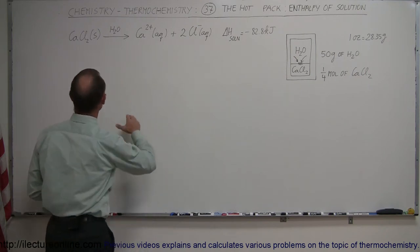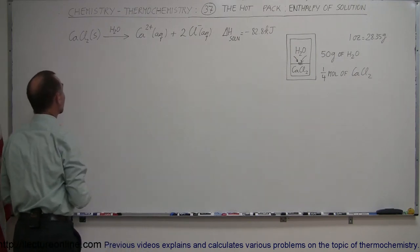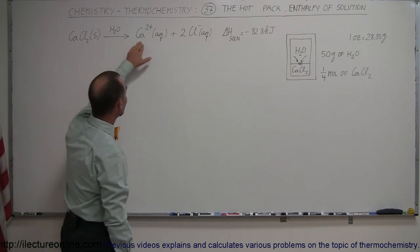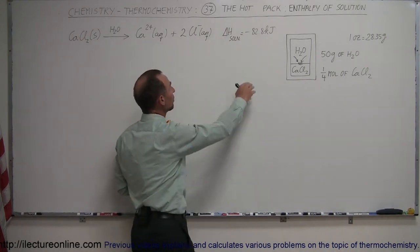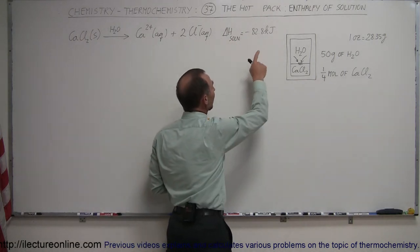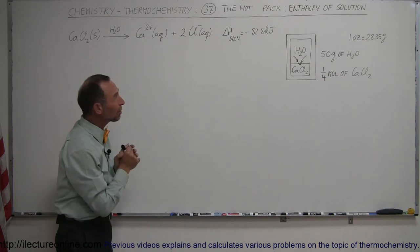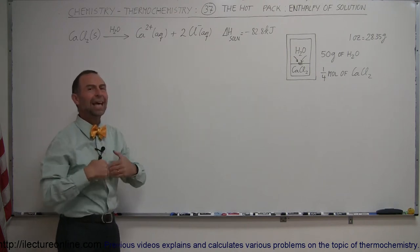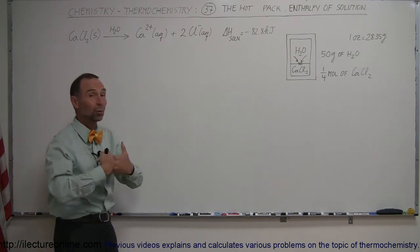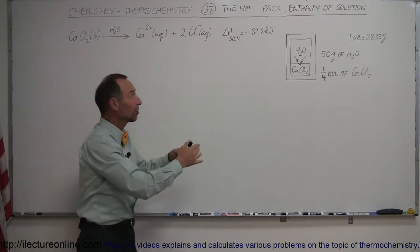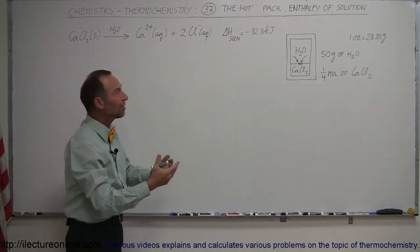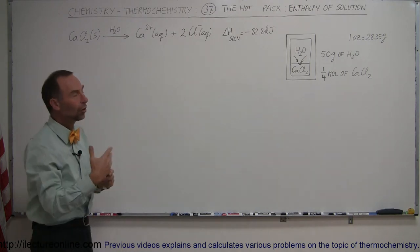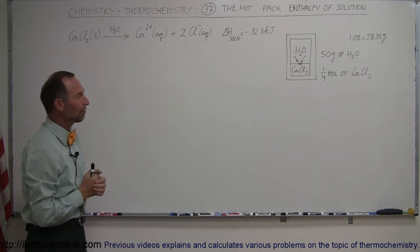So what happens there is that we have a material in there, in this case we have calcium chloride. We dissolve it in water, we separate the calcium ions from the chlorine ions, and all of a sudden we have some heat dissipation. The reason is because the enthalpy of solution is negative, that means it's exothermic. The reaction actually releases heat, that heat then gets absorbed by the water, the water gets warm, and then the water radiates out the heat to the pack and slowly gives you that warmth, keeping your fingers and toes warm.